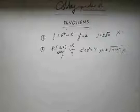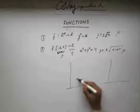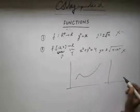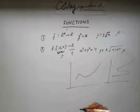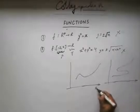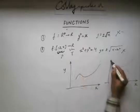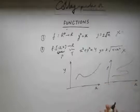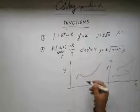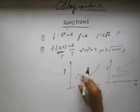Now, graphically we can see whether a function is there or not by plotting the graph. Let's say I have a graph of an equation. In a graph, this is the independent variable x and this is the dependent variable y. If I know the rule which defines y in terms of x, I can draw the graph.